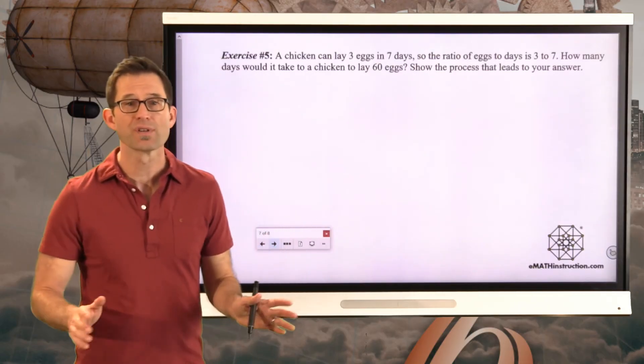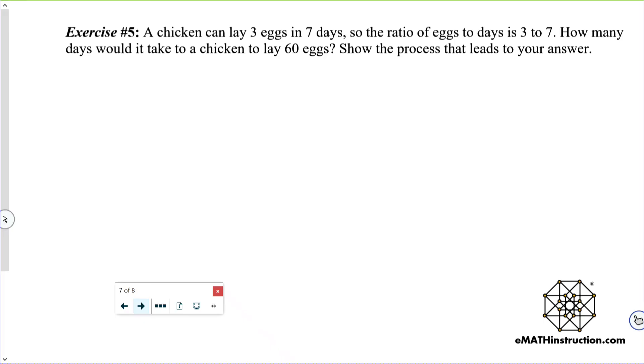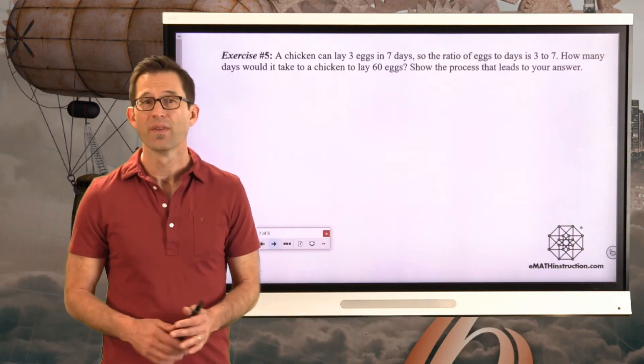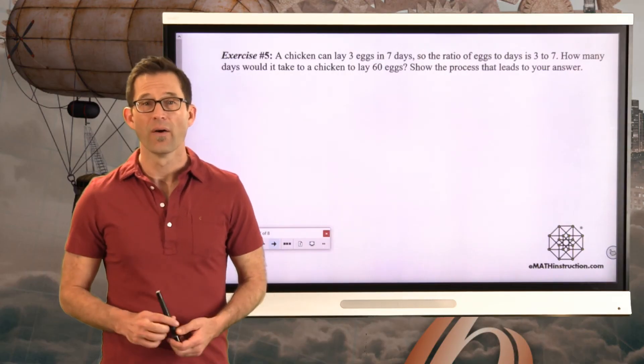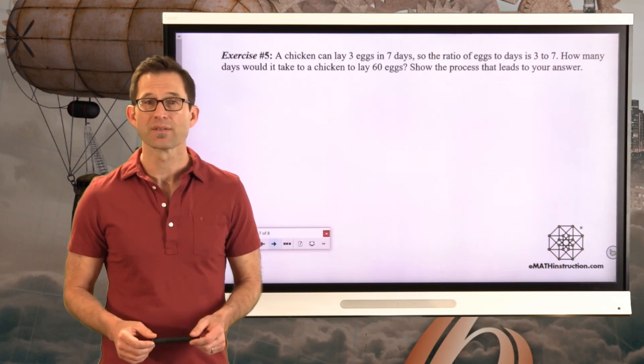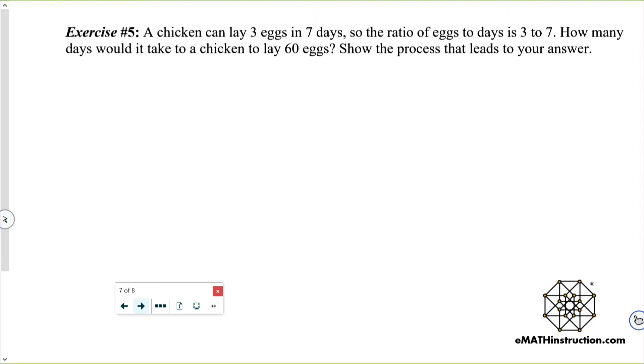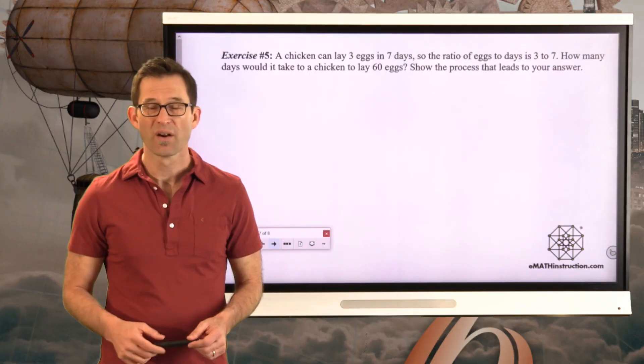Let's do one more problem. Here we go. Exercise number five. A chicken can lay three eggs in seven days. So the ratio of eggs to days is three to seven. How many days would it take a chicken to lay 60 eggs? Show the process that leads to your answer. Why don't you pause the video now and see if you can figure out the answer to this.